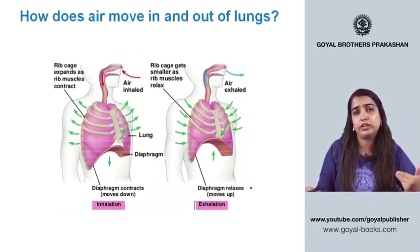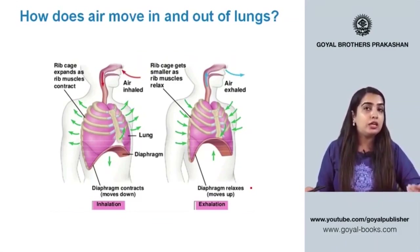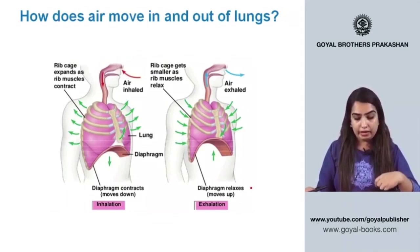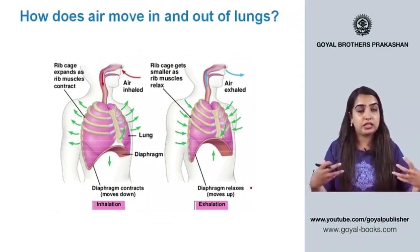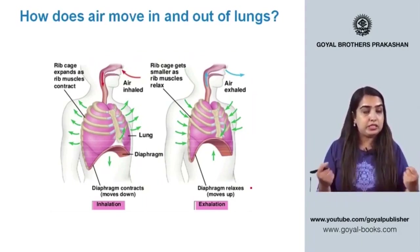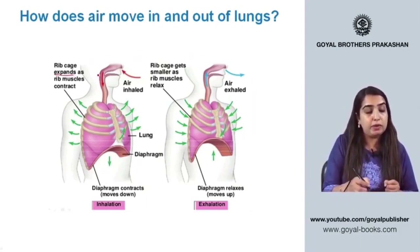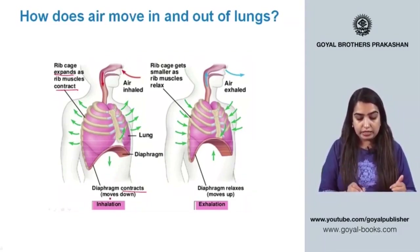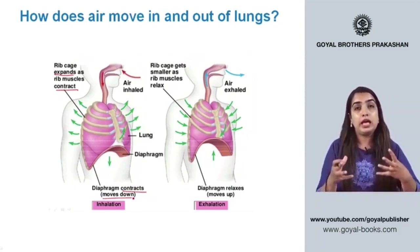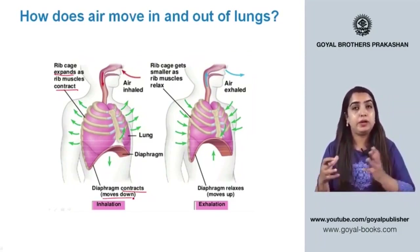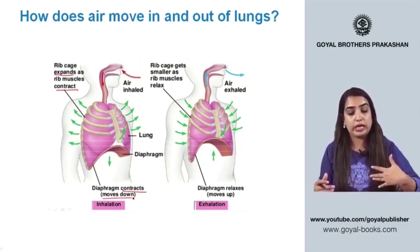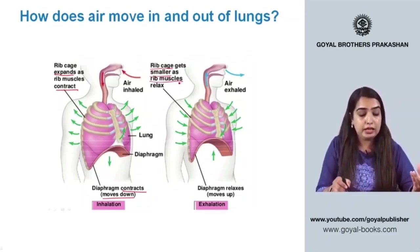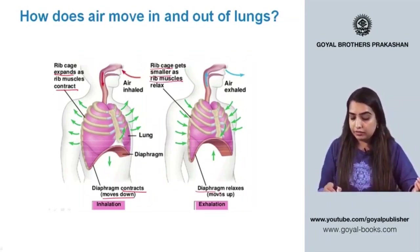How does air move in and out of the lungs? During inhalation, the chest cavity increases because the rib cage expands and the rib muscles contract. The diaphragm contracts and moves down — this is the process of inhalation.